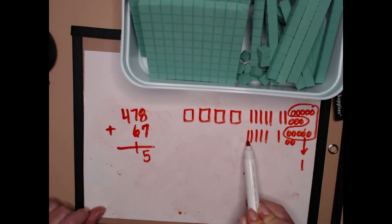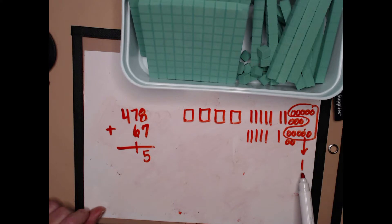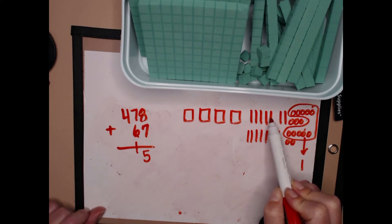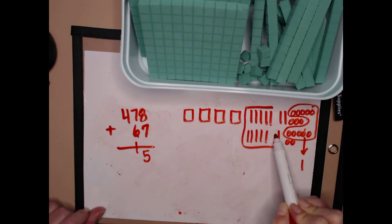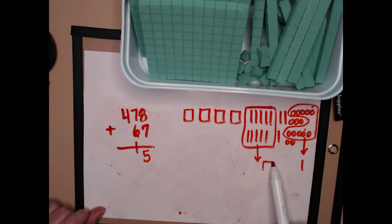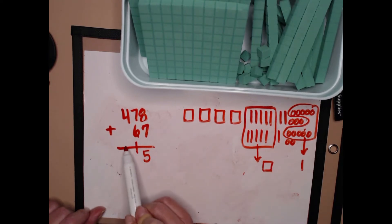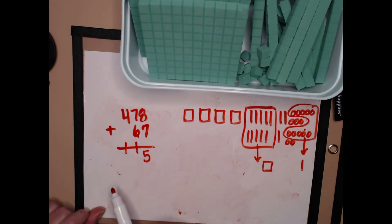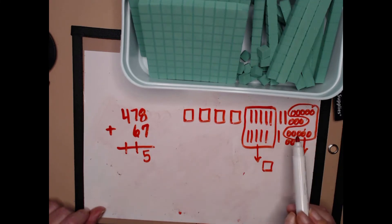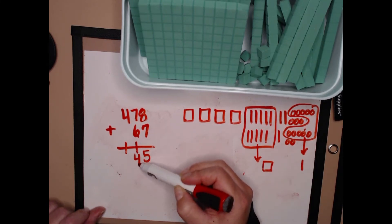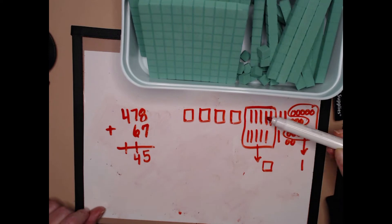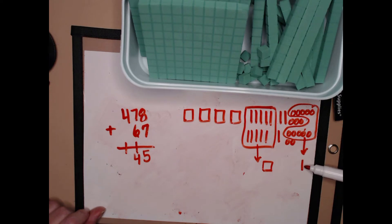Now I have seven tens plus six tens plus one ten. I can see right away that seven tens plus six tens is going to give me a new hundred — I see five and five. I'm going to bring that new group of one hundred over to my hundreds place. I also could have known that seven tens plus six tens was thirteen tens, plus one more ten is fourteen tens.